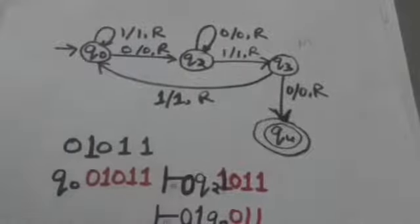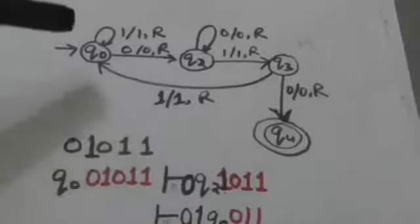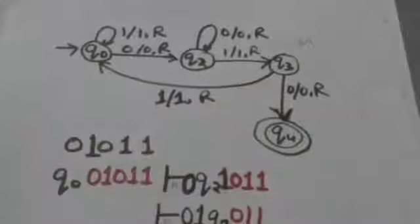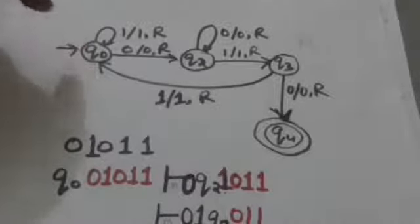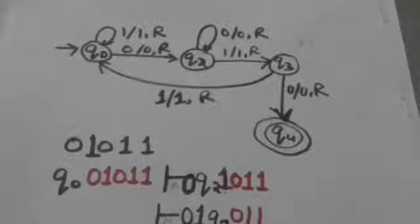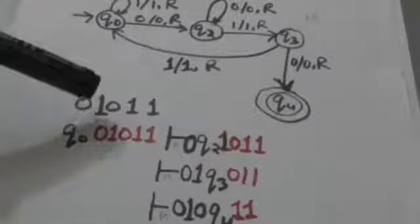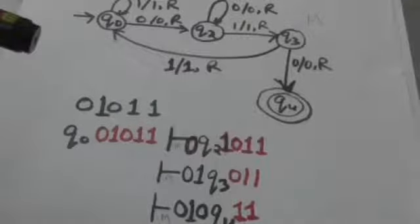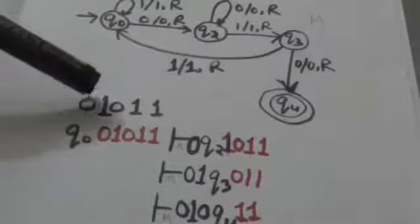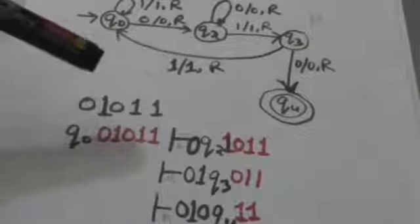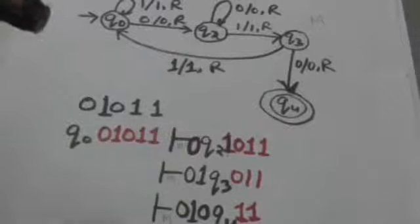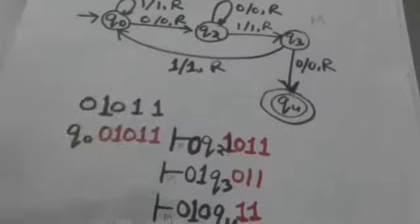It will be more clear after this example. Now consider this Turing machine M. Its initial state is Q0 and its final state is Q4. We have to check whether this Turing machine M accepts the string 0 1 0 1 1 of input symbols or not.